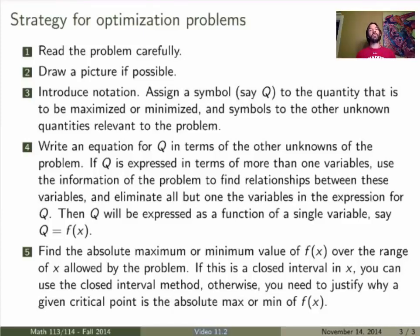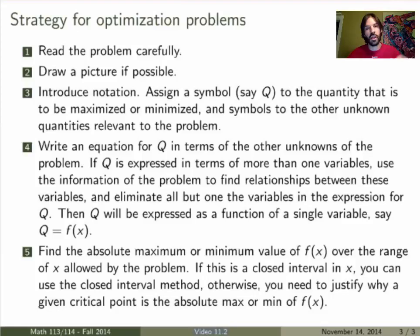Once you have a function of a single variable, you can find its absolute maximum or minimum using calculus. If it's defined over a closed interval, you can use the closed interval method, which is faster. Otherwise, like in the case here, you have to study the properties of the function: find the critical points, the local minima and maxima, and then figure out which of those is the absolute minimum or maximum of the function.